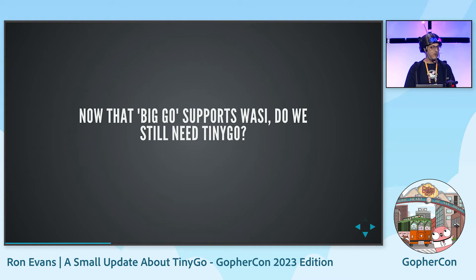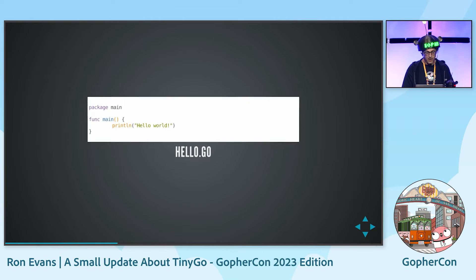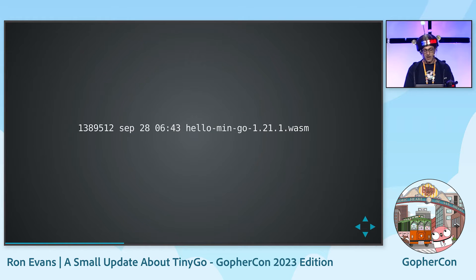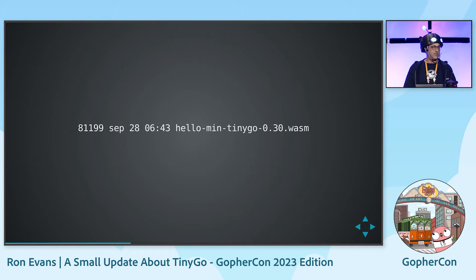The question in the room is: now that BigGo supports WASI, do we even still need TinyGo? So here is a Hello World in Go with no imports — it just prints Hello World. Using Go 1.21.1, compiling it for the WASI target, it is 1.3 megabytes in size. The same exact program compiled in TinyGo: 81K — 17 times smaller.